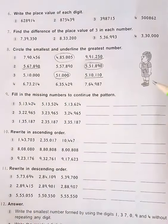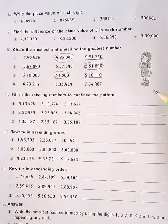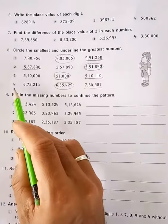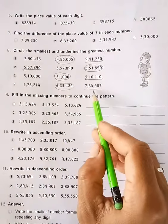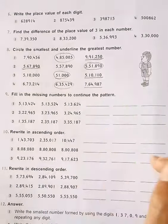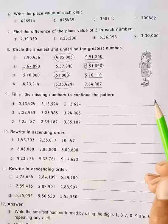Similarly, solve Question 4 in the same way — identify the smallest number to circle and the greatest number to underline.